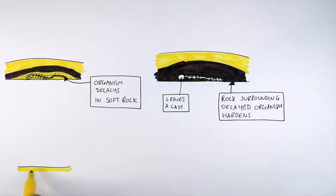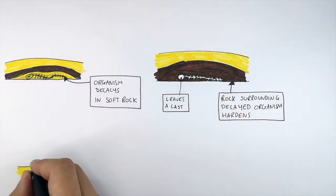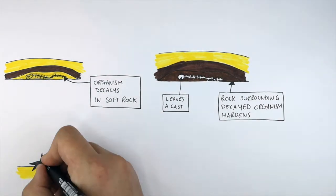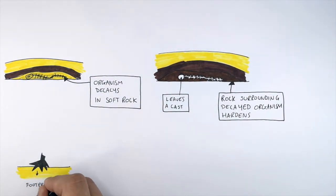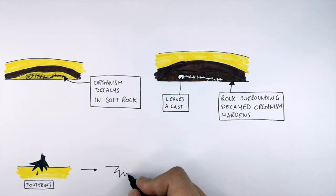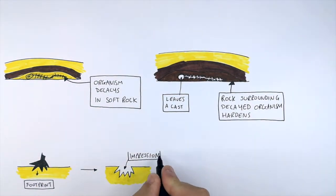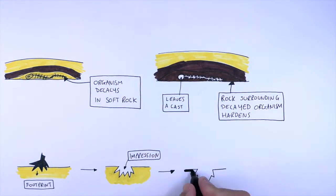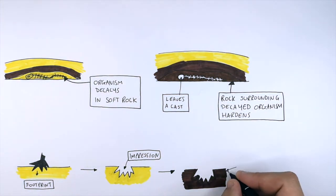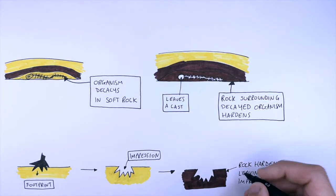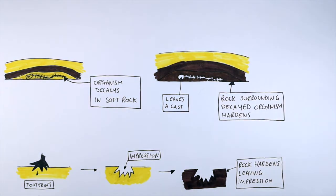This here is soft ground, like clay. This organism's foot steps in the soft clay and leaves a footprint, as you can see here. This causes an impression of the footprint to be left behind in the soft clay. So this here is an impression. If the soft clay hardens, the impression will remain as a fossil. The rock hardens, leaving an impression. These are examples of impression fossils.